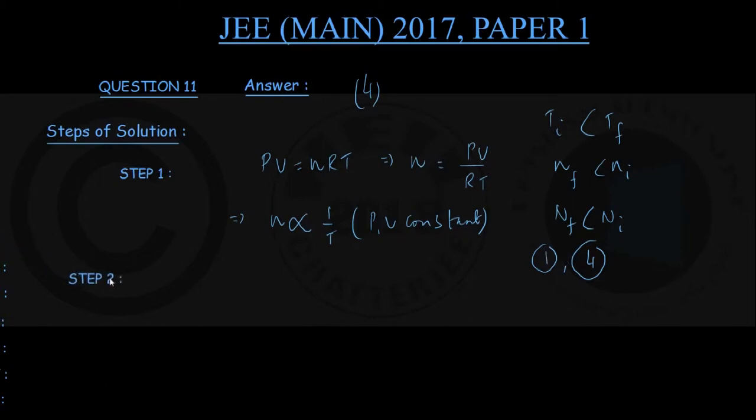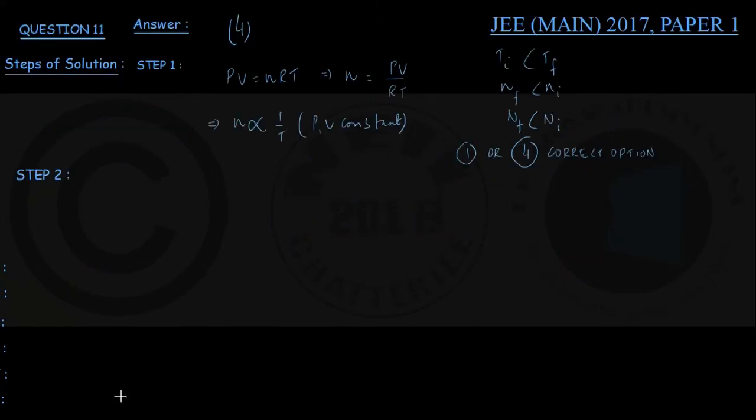Therefore, in step number 2, now since the numerical calculation is involved let us take down the data given in the question. The pressure of air is 1 into 10 to the power 5 Pascal. Pascal is same as Newton per meter square. The data given in one significant figure, note that for pressure.